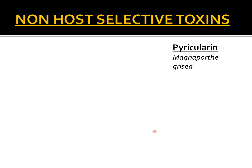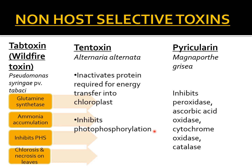The third non-host selective toxin is pyricularin, produced by Magnaporthe grisea — earlier known as Pyricularia oryzae — which causes blast disease of rice. This toxin is known to inhibit a variety of enzymes including peroxidase, catalase, cytochrome c-oxidase, and ascorbic acid oxidase. So the three toxins covered so far are tabtoxin from Pseudomonas syringae pv. tabaci, tentoxin from Alternaria alternata, and pyricularin from Magnaporthe grisea.